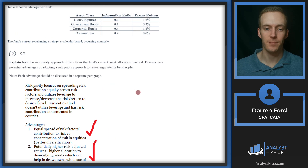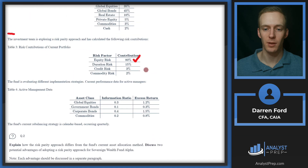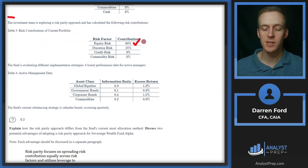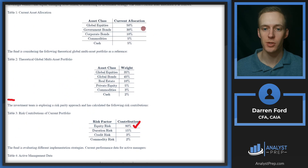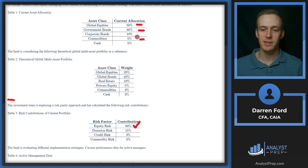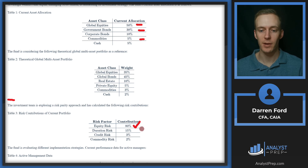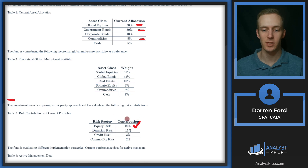Just to talk a bit more about risk parity: essentially, you end up allocating way more to government bonds and commodities and less to global equities — so you're in less risky asset classes. But the major risk comes into play when you start employing leverage. While you're taking less equity risk, you're also taking on more leverage risk, which isn't really considered as a traditional risk factor. So just something to keep in mind.